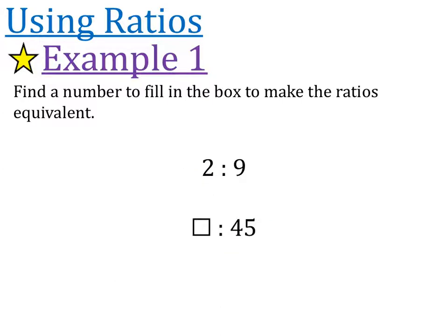This time, the box is on the other side that we're meant to fill in, but it's the same idea. So we ask ourselves, how do we get from 9 to 45? And that is times by 5. So we should also multiply the 2 by 5. 2 times 5 is 10. 2 to 9 is equivalent to 10 to 45. Both of those ratios mean the same thing.